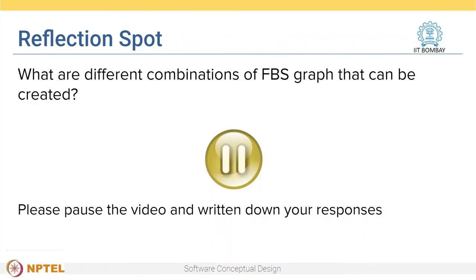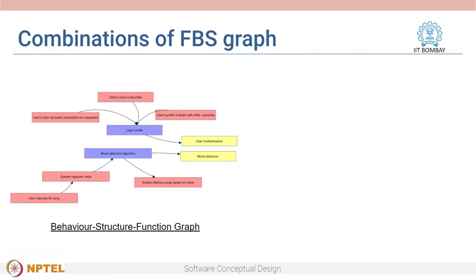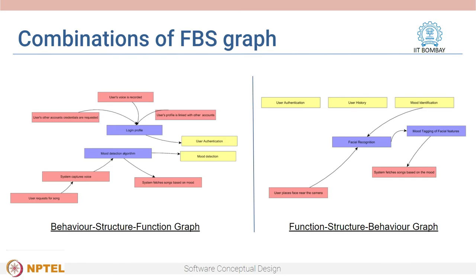Learners, here is a question: can you think of combinations of FBS graphs and the kinds of graphs that can be created? Pause the video, write your answers in the notebook, and continue. As you can see on the screen, there are combinations of the FBS graph. In one graph, the behaviors are mapped to the structures and then the function — B, S, F. In another graph, functions are broken down and mapped to structures which are combined to different end-user behaviors — F, S, B.